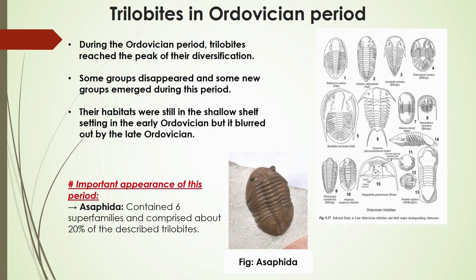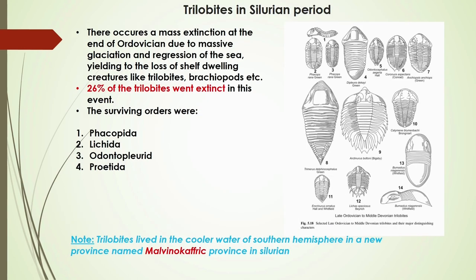In the Silurian period, trilobites faced a massive extinction due to the massive regression of the sea caused by glaciation. Twenty-six percent of the trilobites died in this extinction. The surviving orders were Phacopida, Lichida, Odontopleurida, and Proetida. They moved their habitat to the southern hemisphere into a new province called Malvinographic.